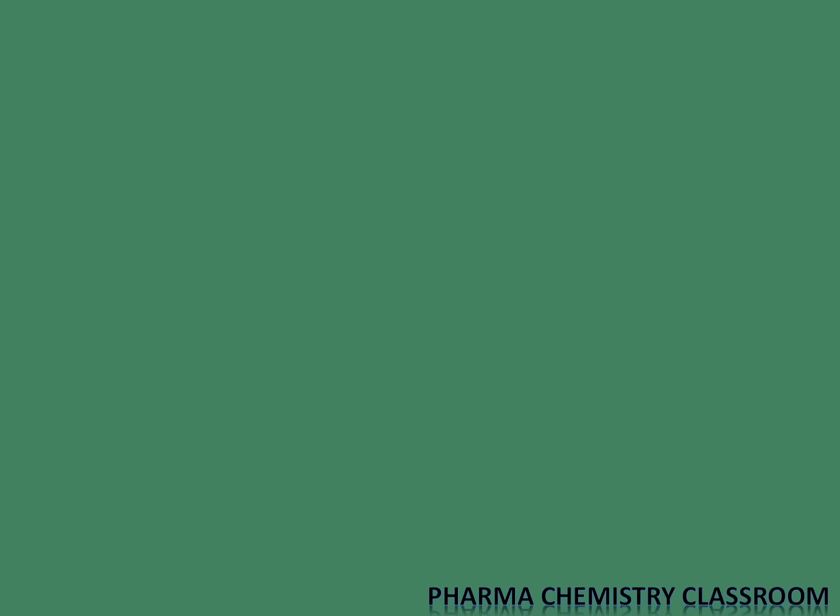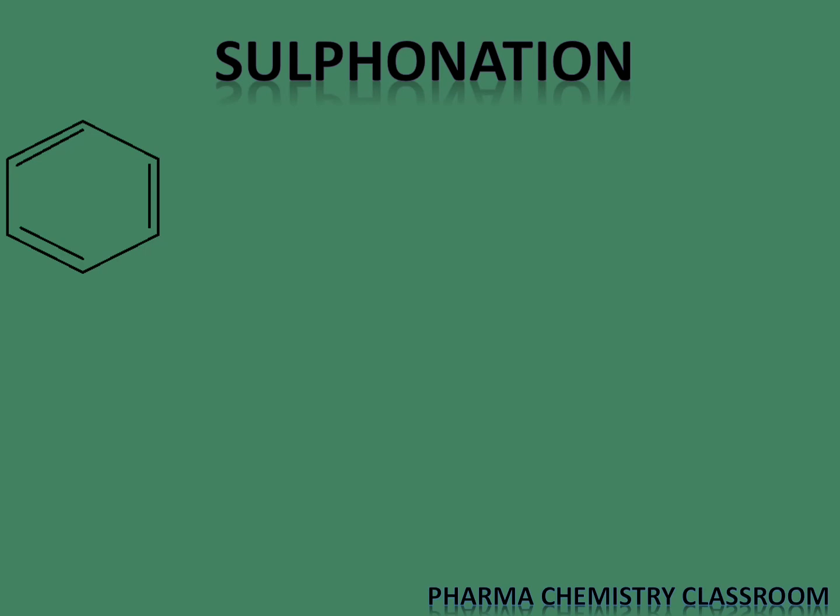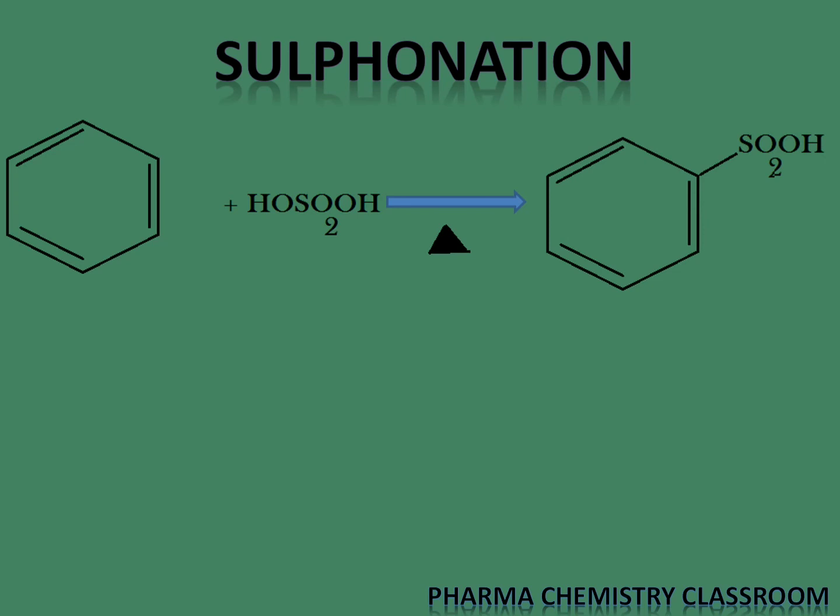The next reaction we are going to focus on is sulfonation. Sulfonation is the reaction of benzene with sulfuric acid to get benzene sulfonic acid. This reaction is reversible, so heat energy is used.